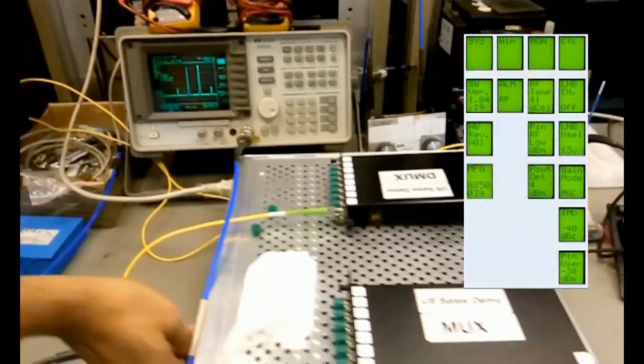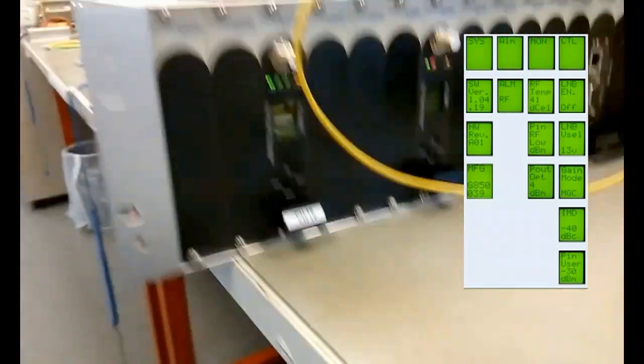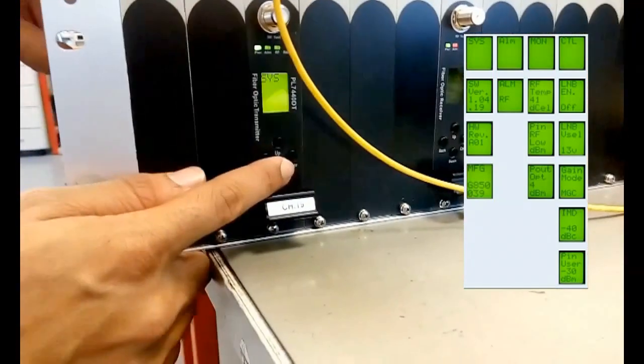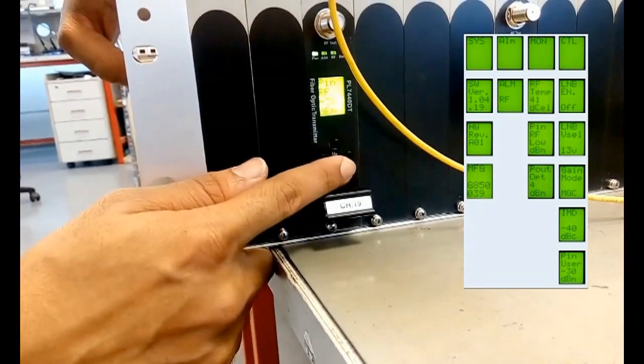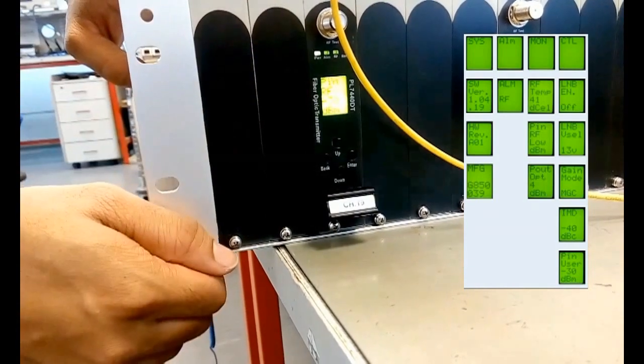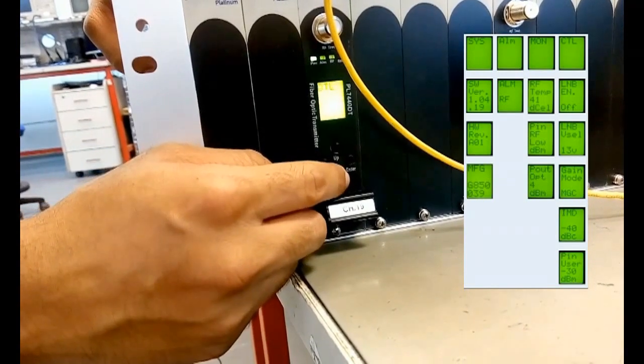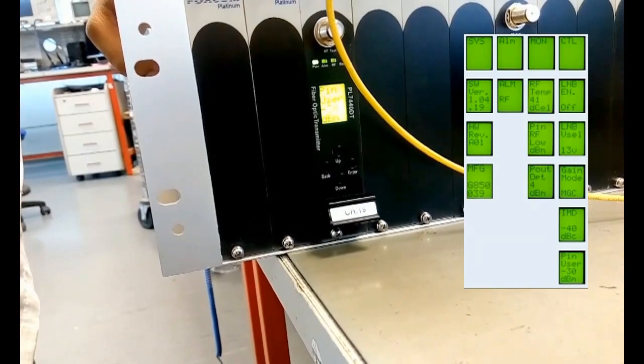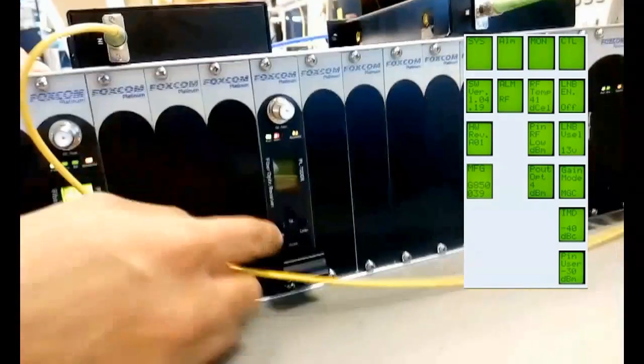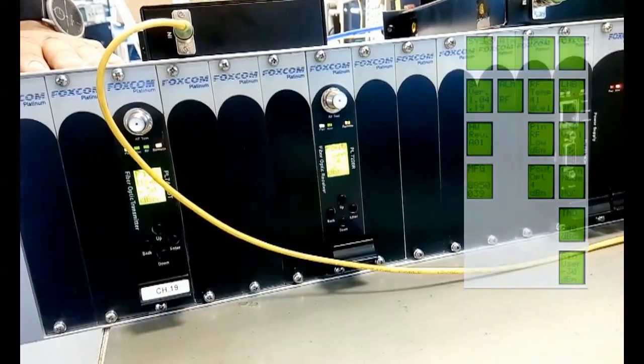Foxcom units are all equipped with a front panel LCD screen for local control. Every command can also be done via the SNMP agent remotely. Foxcom's transmitters, being the most advanced units in the market, are equipped with an internal accurate power meter to give you a total RF power reading within plus minus 1 dB. Using the front panel LCD, I can check my input power, set my IMD, turn on my LNB powering to 13 or 18 volts, and much more.